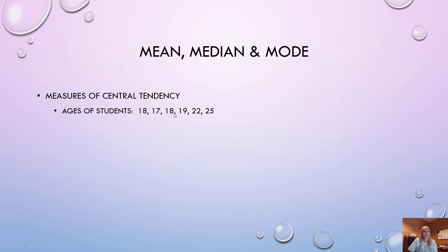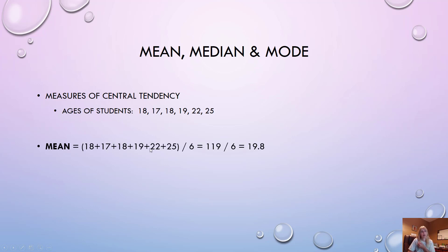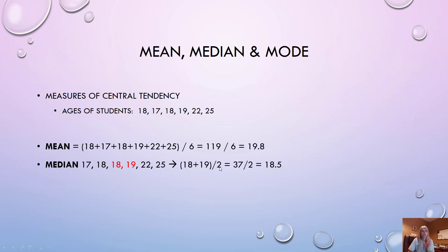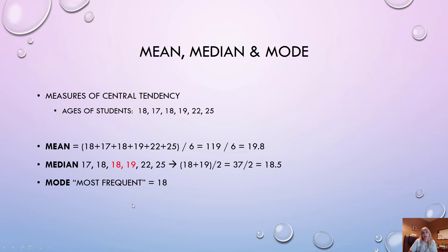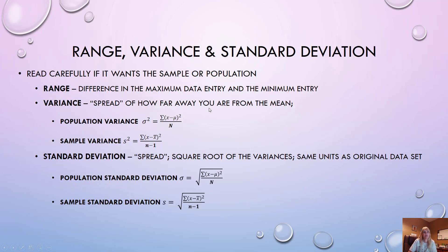Mean, median, and mode: for the mean with ages of students, just add them all up and divide by the total number of students. For the median, the big trick is to put the data in order first. If there's an odd number, it's just the middle value; if even, average the two middle values. The mode is the value that appears most frequently.